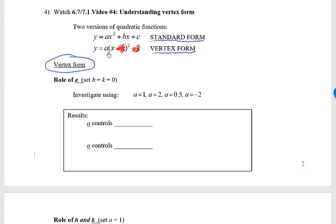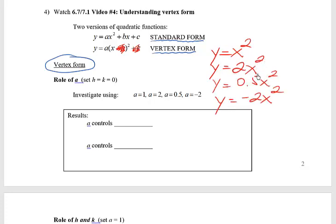For example, when a is 1, if I plug a 1 right here, I'm just going to have y equals 1x squared. In other words, y equals x squared. If a is 2, I would have 2x squared, and I can fill in the rest as well. y equals 0.5x squared, y equals negative 2x squared.